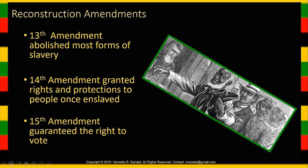The 13th Amendment abolished slavery outright — most forms of slavery, because some people don't realize the 13th Amendment exempts certain kinds of slavery. I plan to do a lecture on the 13th and also the 15th Amendment. The 14th Amendment was designed to get rid of the indicia of slavery and to provide a number of protections. The 15th Amendment was done to guarantee the right to vote. So the 13th, 14th, and 15th are the Reconstruction Amendments, designed to undo the indicia of slavery.